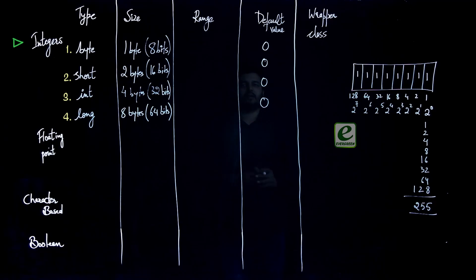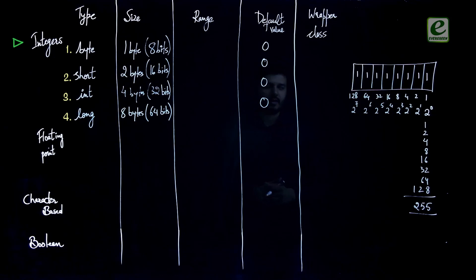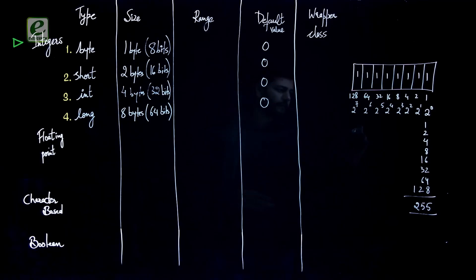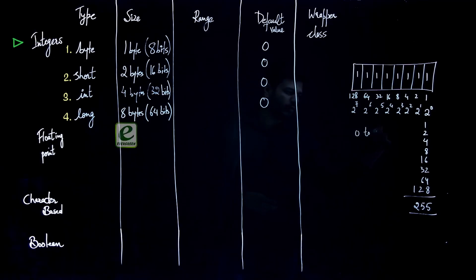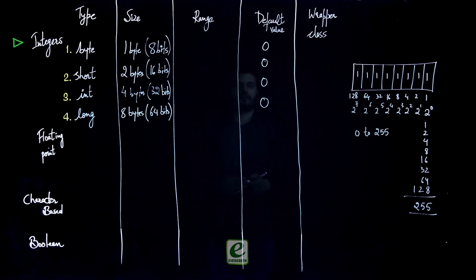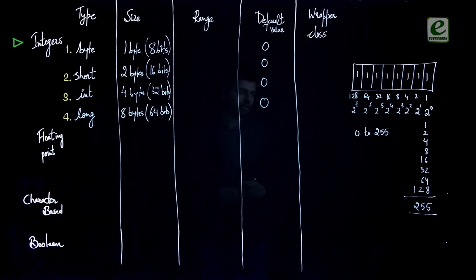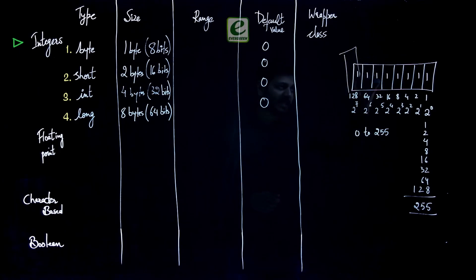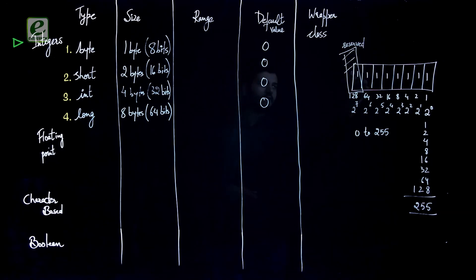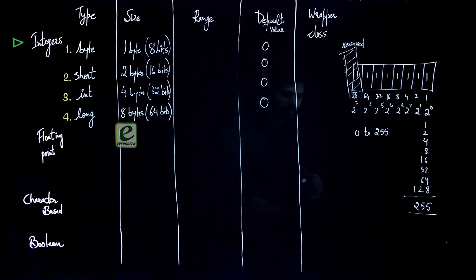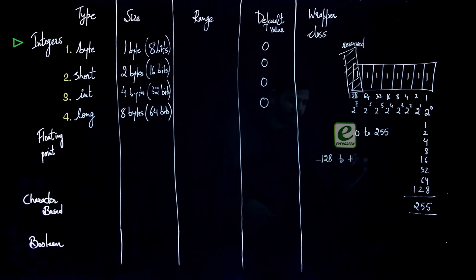The maximum value from 8 bits is 255, and the minimum value — when you put all zeros — is 0. So the range for 8 bits would be 0 to 255, but that is in the case of unsigned. Java doesn't support unsigned data types; it supports signed data types. So the first bit, called the MSB, is always reserved, and the range becomes minus 128 to plus 127.